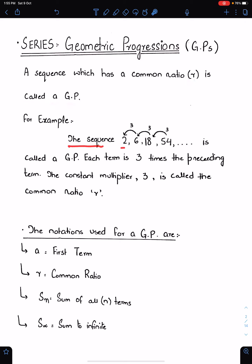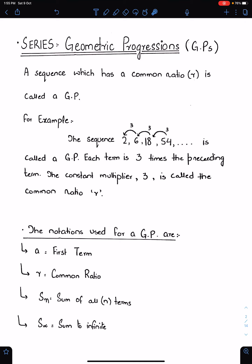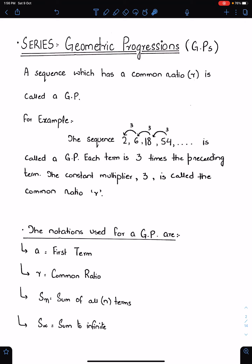For example, the sequence 2, 6, 18, 54 is called a GP because each term is 3 times the preceding term: 2 times 3 makes 6, 6 times 3 makes 18, 18 times 3 makes 54. The constant multiplier 3 is called the common ratio. You can also understand it this way: the ratio of any two consecutive terms is constant. Like 6 upon 2 is 3, and 54 upon 18 is also 3. So if the ratio of any two consecutive terms is the same, then the sequence is a GP.